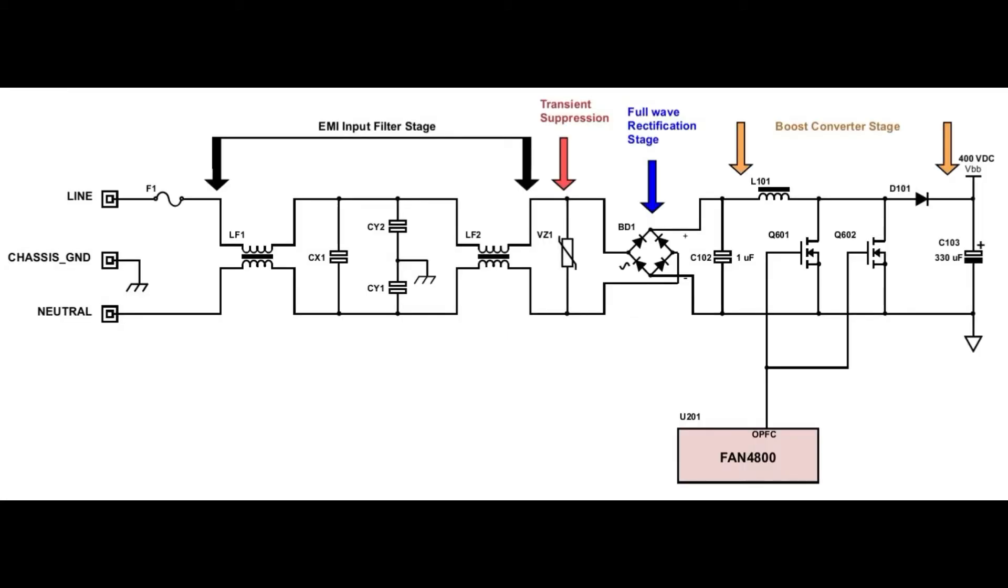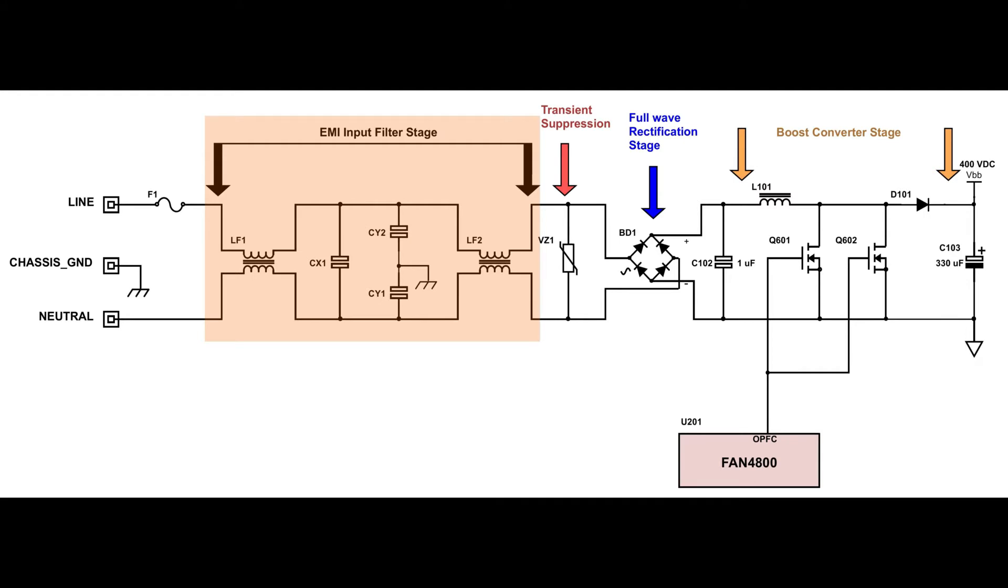I also created a partial schematic based on the component layout that included the C103 electrolytic capacitor. Now for a little circuit explanation leading up to the C103 capacitor. The first section shown in the schematic is the EMI input filter stage. Here you can see it basically contains two combo chokes, LF1 and LF2, an X capacitor CX1, and two Y capacitors, CY1 and CY2.